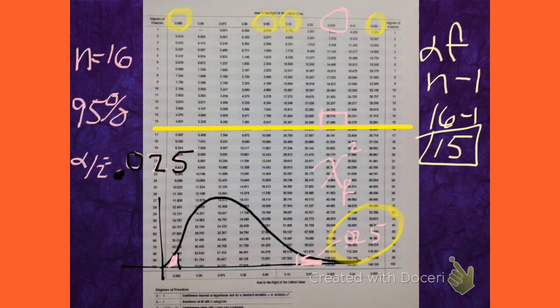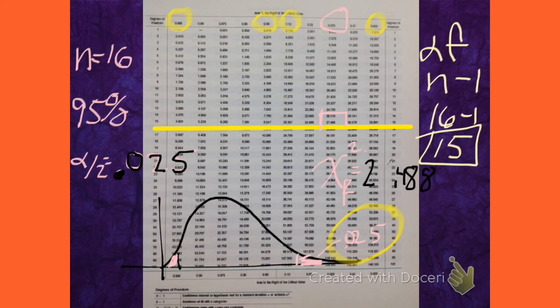The numbers are written so small — I thought it was 27,000! Chi-right is 27.488.